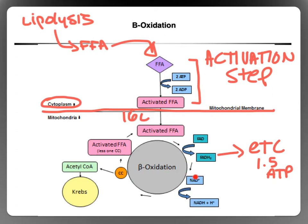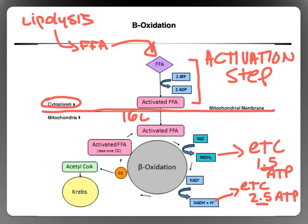In the next step, the activated FFA releases another pair of hydrogens and electrons, and this time they're picked up by NAD instead of FAD, and we end up with NADH+H+. The activated FFA was again oxidized and NAD was reduced. This NADH+H+ goes off to the electron transport chain, and as a result we get 2.5 ATP. We get 1 more ATP from NADH+H+ than from FADH2 because FAD enters the electron transport chain at a later step, so we never get that first ATP.